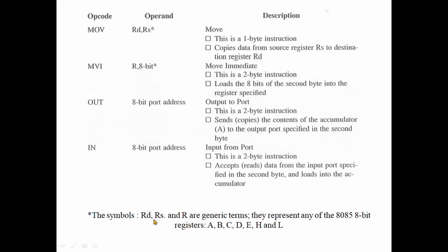For Move Immediate, there is a destination and a data byte — this is a 2-byte instruction. The opcode is 1 byte and the immediate data is 1 byte, making it a 2-byte instruction total.